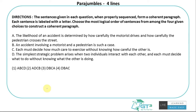Para jumbles — one type involves four lines. Basically, you're given four, five, or more sentences that are not in the proper sequence. It doesn't mean that ABCD makes a meaningful paragraph. You need to identify the correct sequence in which arranging them makes a meaningful paragraph. Options might be ABCD, ADCB, DBCA, or DBAC — you need to find the logical order that creates a coherent paragraph.